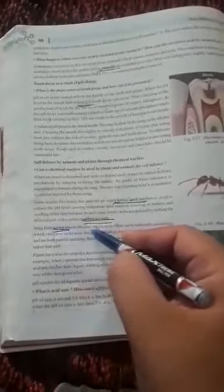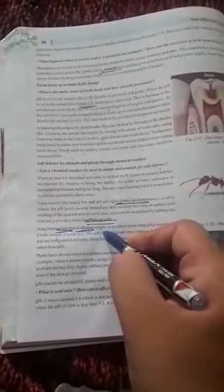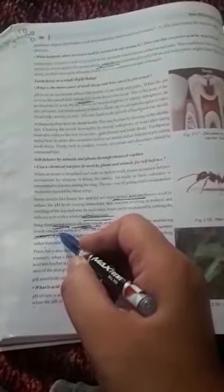And if a wasp sting occurs, wasp sting releases alkaline venom. Venom means poison. It releases alkaline poison. Then we apply some acid, weak acid, not a strong one like vinegar. Vinegar, it is sirka, which is available in our kitchen. If we apply that, we will get relief. So this is the use of pH value in our everyday life.